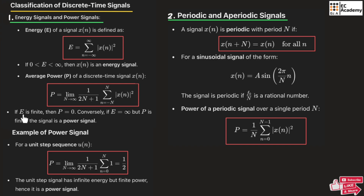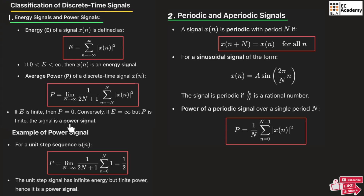If energy is finite, then P will be equal to 0. If energy is infinity, then power will be finite. If energy is infinity and power is a finite value, such a signal is known as a power signal. For an energy signal, the energy should range between 0 to infinity. For a power signal, the power should be a finite value and energy should be infinity.